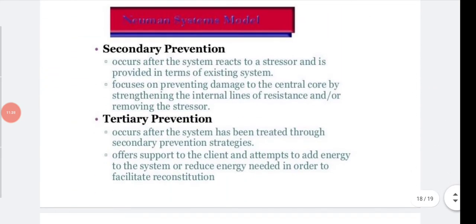Secondary prevention occurs after the system reacts to a stressor. It focuses on preventing damage to the central core by strengthening the internal lines of resistance and removing the stressor through detection and treatment. If the central core is damaged, the whole system is compromised — like a CPU failure shutting down the entire system.